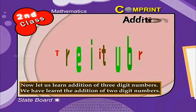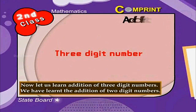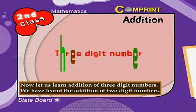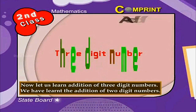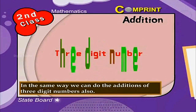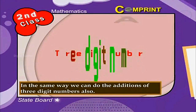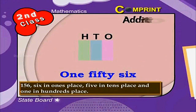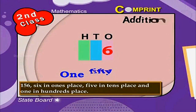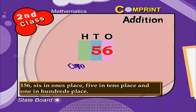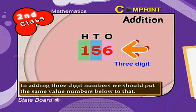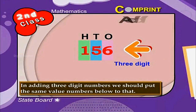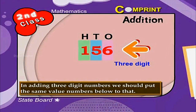Now let us learn addition of 3 digit numbers. We have learnt the addition of 2 digit numbers. In the same way, we can do additions of 3 digit numbers also. We know that for 3 digit numbers there are 3 place values. For example, 156: 6 is in ones place, 5 is in tens place, and 1 is in hundreds place. In adding 3 digit numbers, we should put the same value numbers below each other.